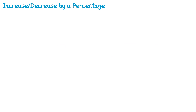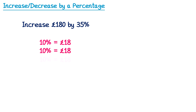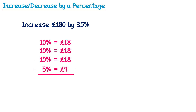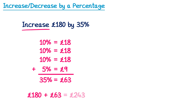Now let's try a couple of examples where the percentages are slightly more difficult. Increase £180 by 35%. We'll use a non-calculator method, starting with 10%, which is £18. Three lots of 10% give us 30%, so we just want 5% more. We can find 5% by dividing 10% by 2: £18 divided by 2 is £9. Adding 10% + 10% + 10% + 5% gives 35%, and 18 + 18 + 18 + 9 = £63. Because the question says increase, we add this on: £180 + £63 = £243.